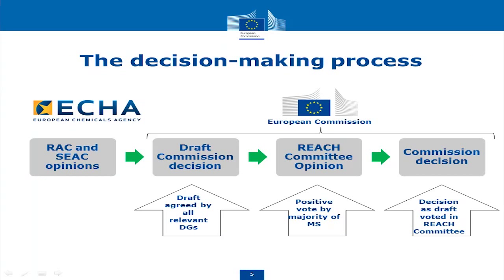What is the process? This is very schematic but has all the elements. First, the RAC and the SEAC opinions come to us. Then the Commission has three months to have its draft decision — not the final decision, but the draft decision. The leading role in the Commission for REACH is shared by two DGs: DG Grow and DG Environment. Any draft decision has to be agreed between these two DGs before anything else happens, and this might take some time because not all the opinions are straightforward.